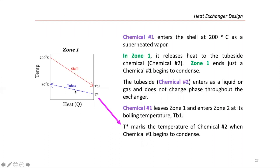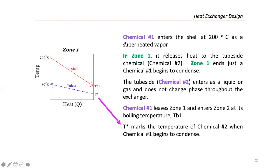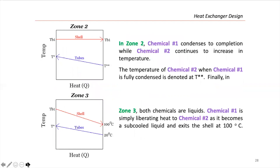Here I'm dividing into three zones. In zone one, chemical one enters the shell at 200°C as a superheated vapor and releases heat to the tube-side fluid (chemical two). Zone one ends just as chemical one begins to condense. The tube-side chemical two enters as a liquid or gas and does not change phase throughout the heat exchanger. Chemical one leaves zone one and enters zone two at its boiling temperature. T* marks the temperature of chemical two when chemical one begins to condensate.